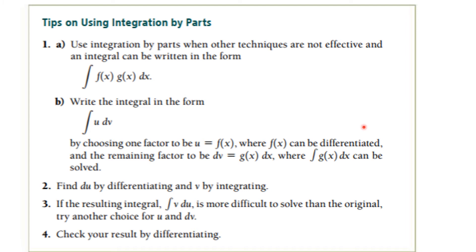Now let's summarize some tips. We use Integration by Parts when other techniques are not effective and we can write the integral in the form ∫f(x)g(x) dx. We choose one factor to be u and the remaining factor is dv, and we must be able to integrate that g(x) dx. Find du by differentiating u and find v by integrating. If the resulting integral is more difficult than the original, it probably wasn't a good choice. When you get an answer, you can always check by taking the derivative.